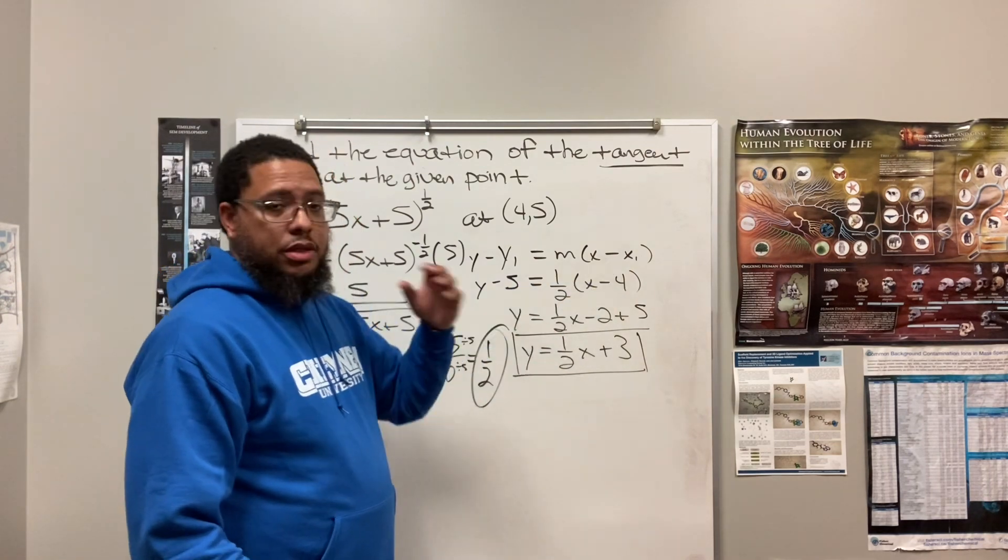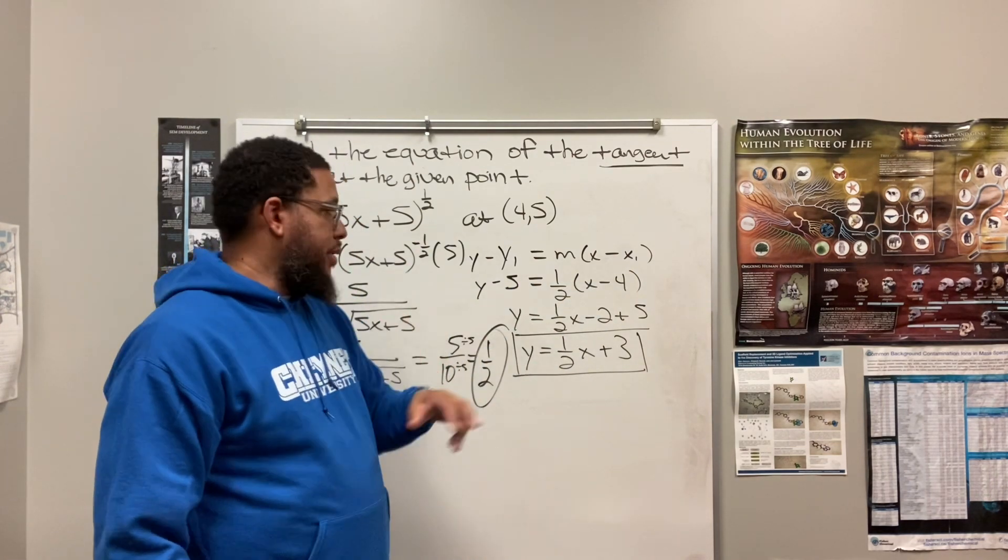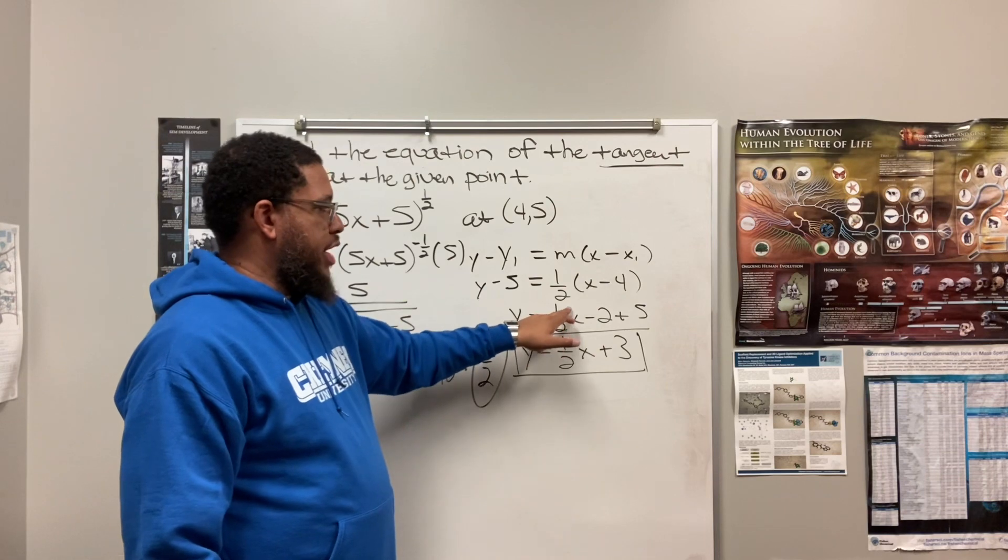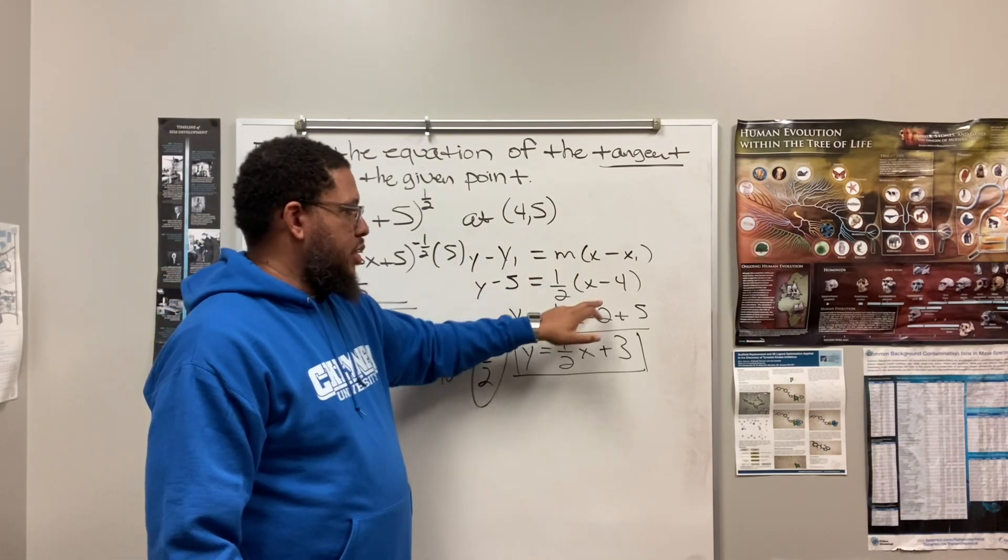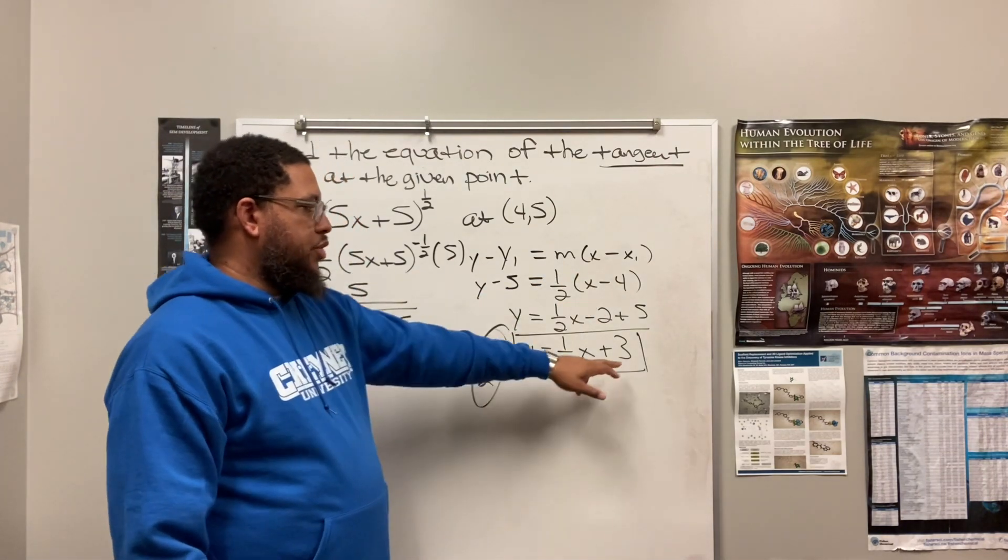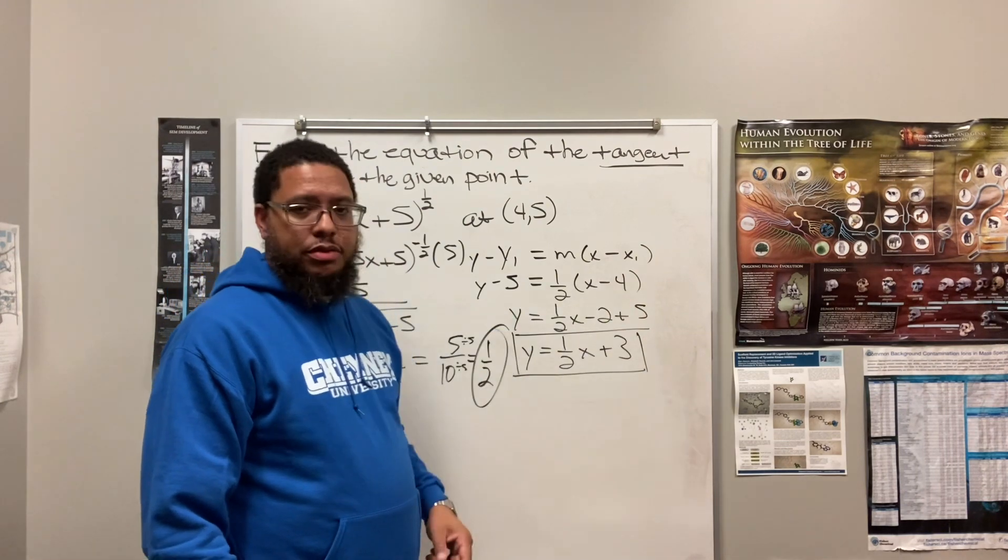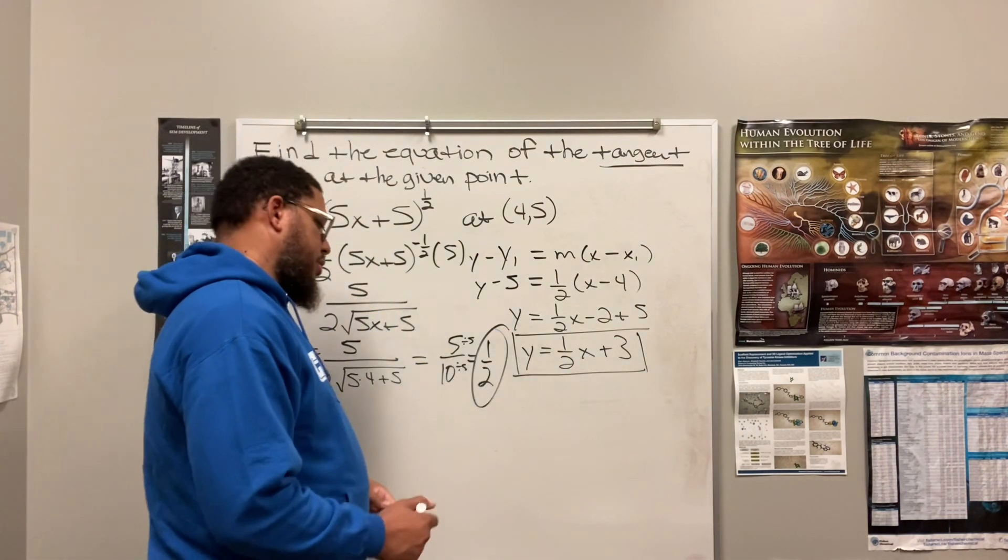What happened to the X and the negative 4? Distribution or distributive property. 1 half times X is 1 half X. 1 half times negative 4 is negative 2. Where did 3 come from? Negative 2 plus 5. That's how I get 3. All right. And that's the answer.